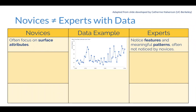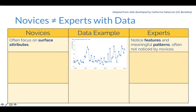This is work summarized at the University of California Berkeley Lawrence Hall of Science, and let's think about how it applies to data. One of the big differences is that novices, as they're taking information in, often focus on surface attributes. Whereas as experts, we notice features and meaningful patterns that are not necessarily noticed by novices. For a data example, let's say you're doing a unit on climate and the impact of climate change on different organisms — here we're looking at black sea bass, a common fish species off the eastern seaboard.